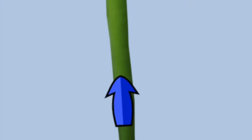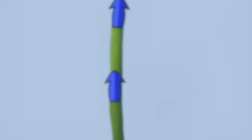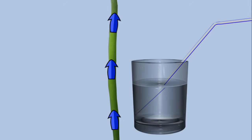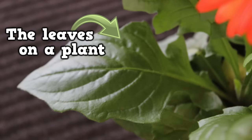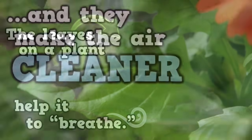Through the stem that water flows — it's like a straw, watch it go! The leaves on a plant help it to breathe, and they make the air cleaner for you and me.